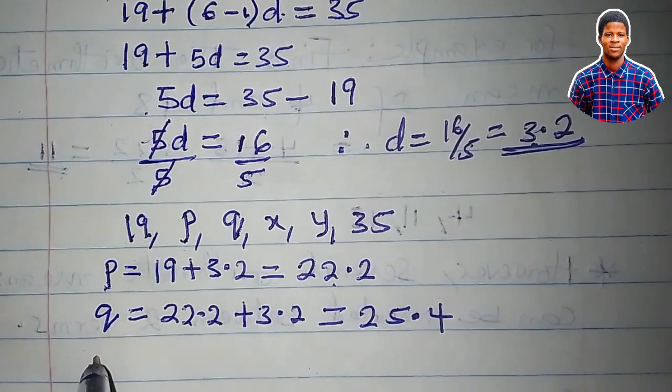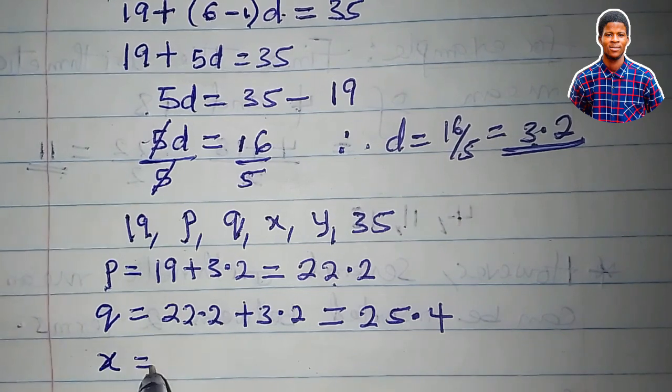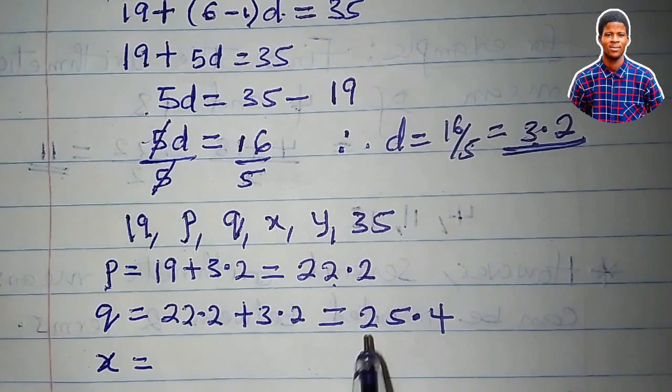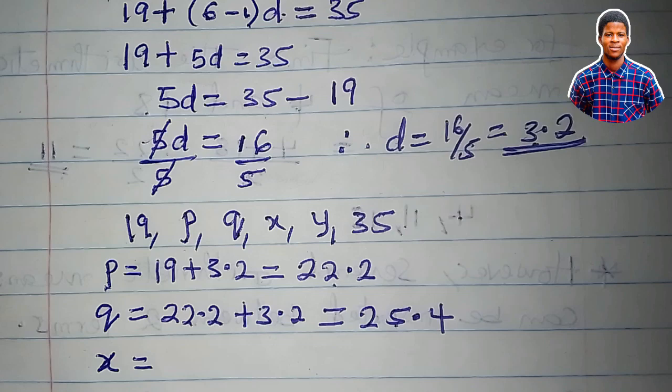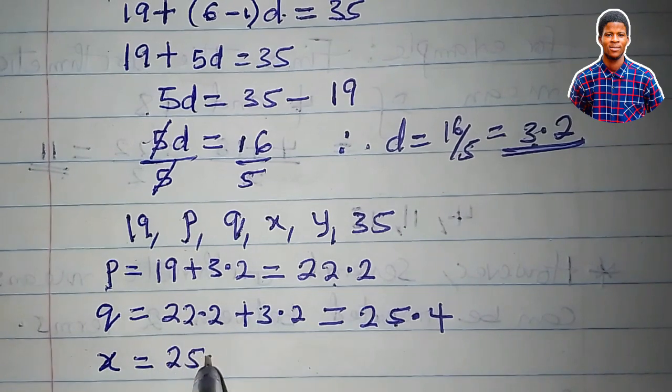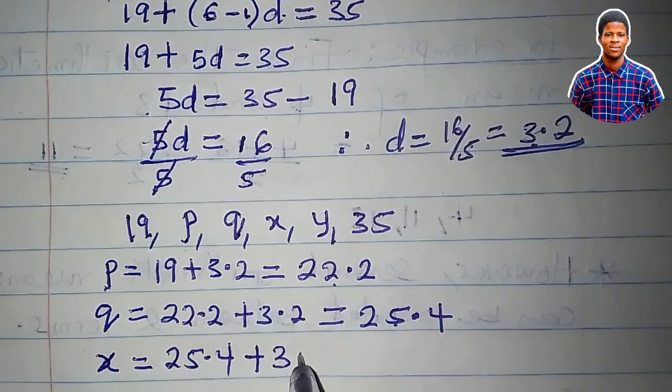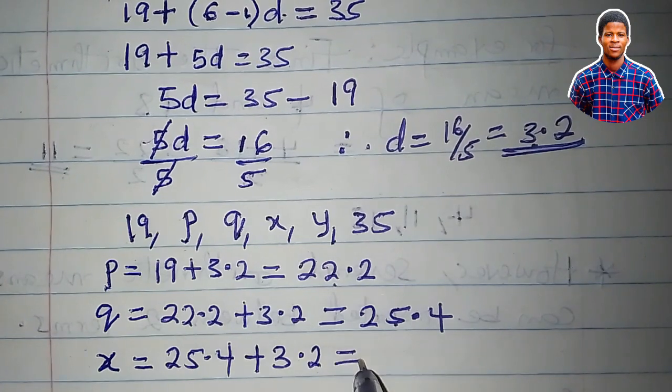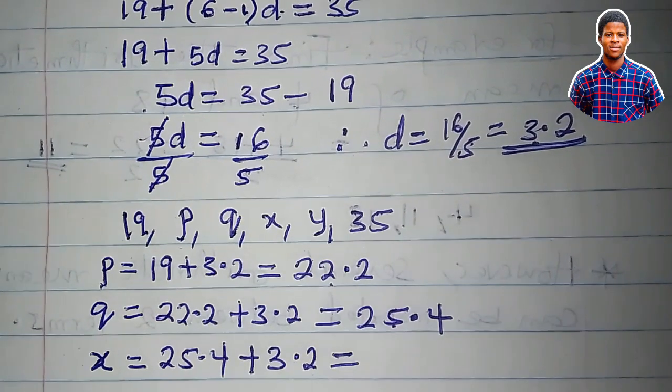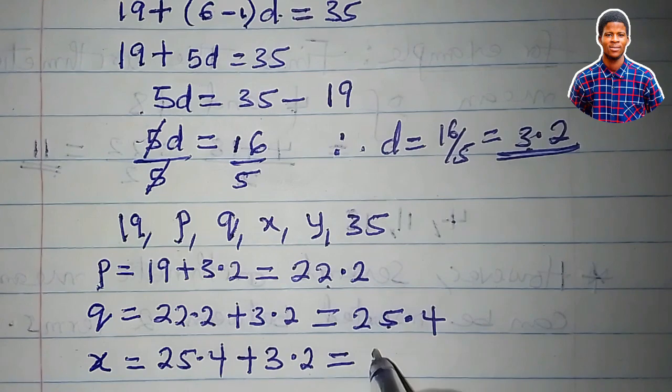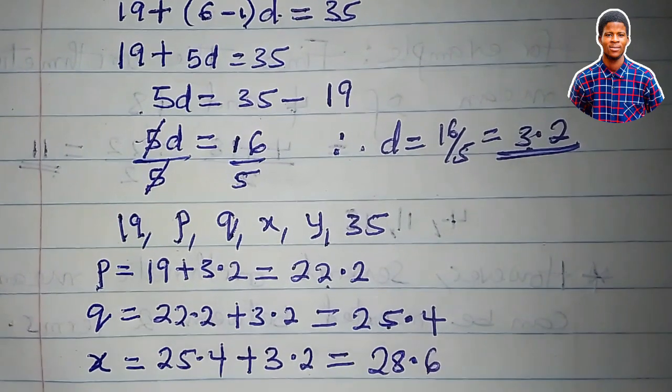To get X, which is the next term after Q, I will add the difference, the common difference, to this value of Q now. That would be 25.4 plus the common difference, 3.2. I hope you understand the iteration I'm performing right now, and that's equal to 28.6.